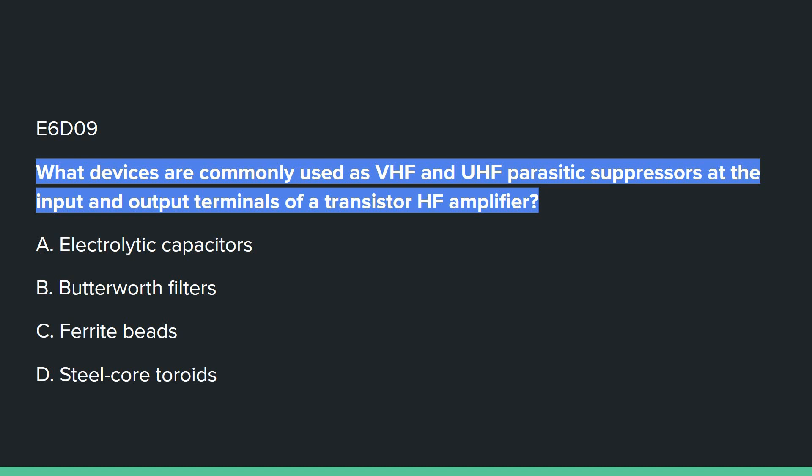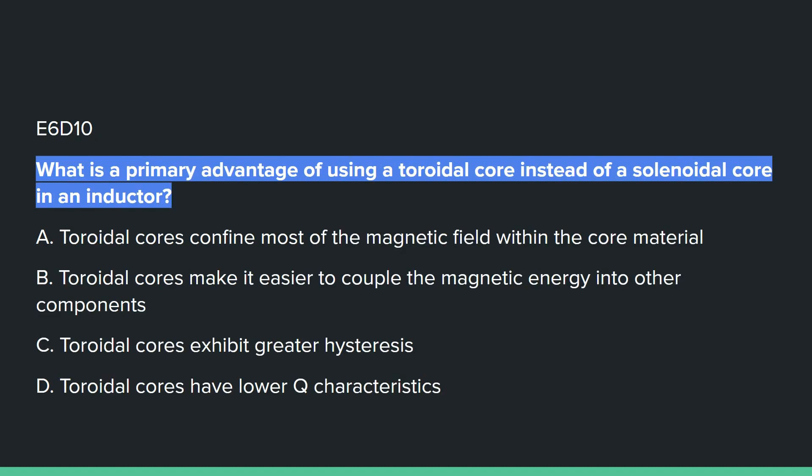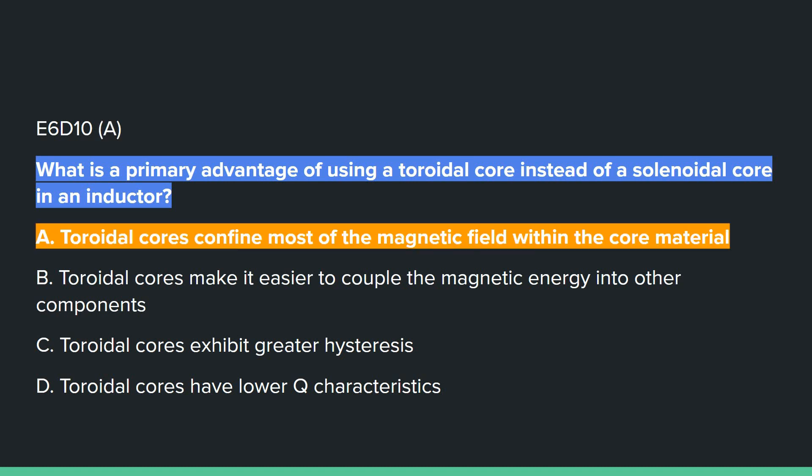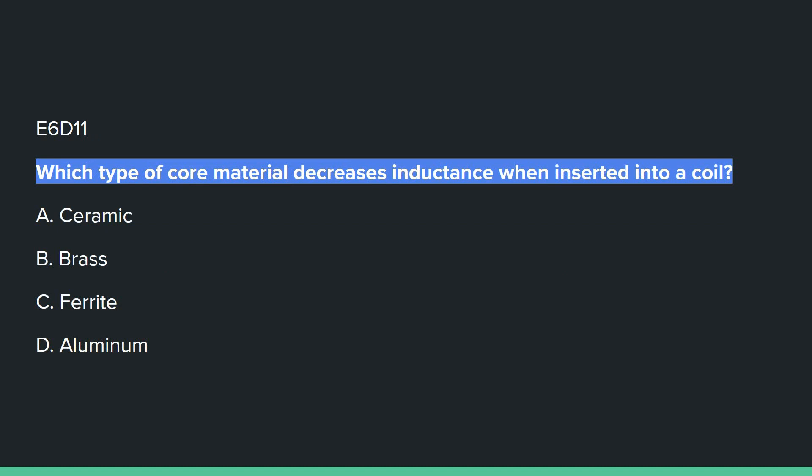E6D09: What devices are commonly used as VHF and UHF parasitic suppressors at the input and output terminals of a transistor HF amplifier? C, ferrite beads. E6D10: What is the primary advantage of using a toroidal core instead of a solenoidal core in an inductor? A, toroidal cores confine most of the magnetic field within the core material. E6D11: Which type of core material decreases inductance when inserted into a coil? B, brass.